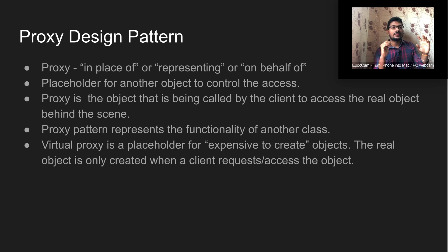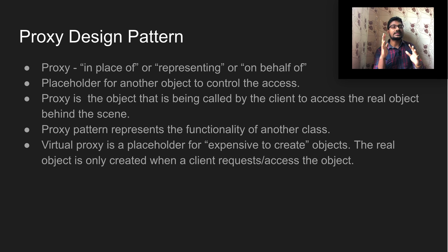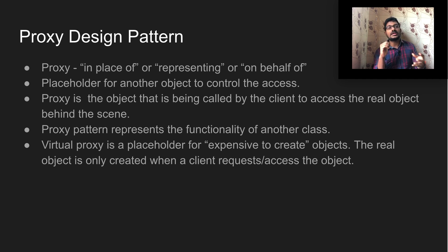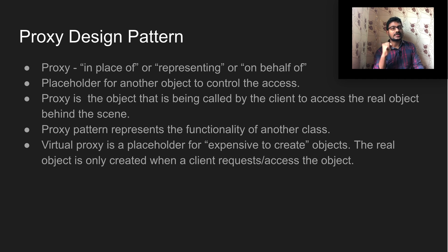For example, if a client is trying to access the student data of a particular student — say student ID 1 — the client is not aware of the real object at all. The real object won't be created until the client actually requests it. The proxy is shown to the client until then. When the client actually requires the data, only then is the real object created: the student ID 1 data is fetched from the database on the fly and converted into the real object, which is then served to the client.